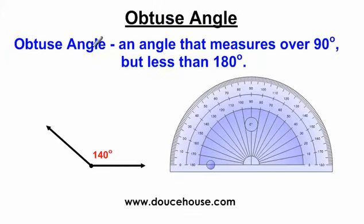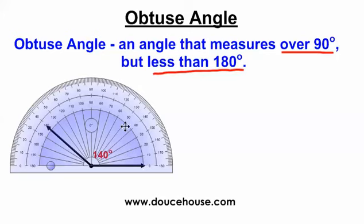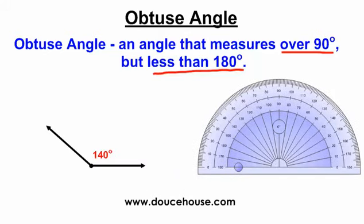Moving on, we have an obtuse angle. An obtuse angle is an angle that measures over 90 degrees but less than 180 degrees — so from 91 degrees all the way up to 179 degrees. If I were to take this protractor and measure it, it goes from 0 all the way up to 140. Since this is between 90 and 180 degrees, this is an obtuse angle. If you're not sure whether something's obtuse, draw a line straight up from the vertex representing about 90 degrees — if the angle is definitely greater than that, it's obtuse.